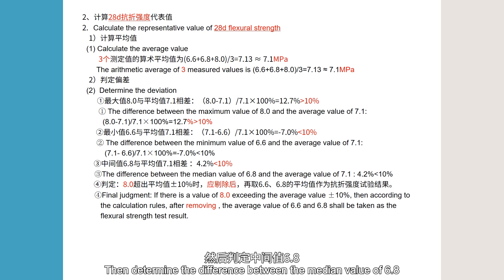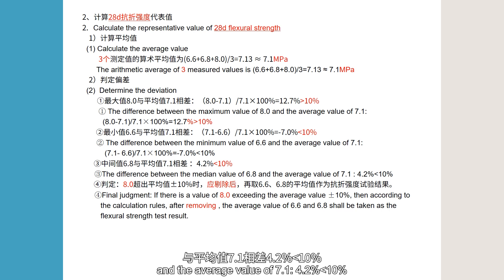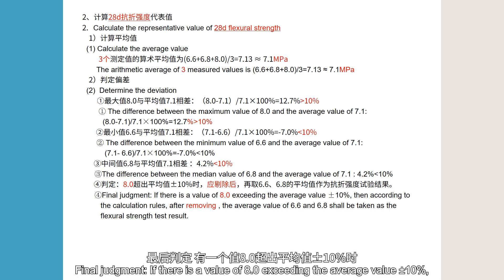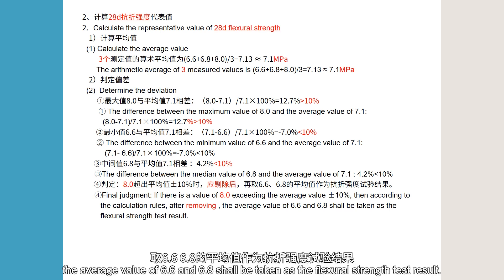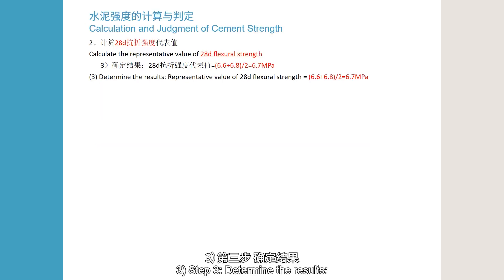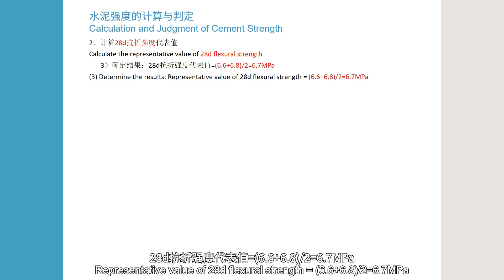The median value 6.8: (7.1 − 6.8) ÷ 7.1 × 100% = 4.2%, less than 10%. Final judgment: since 8.0 exceeds plus or minus 10% of the average, it is removed. Step 3: The representative value of 28-day flexural strength = (6.6 + 6.8) ÷ 2 = 6.7 MPa.